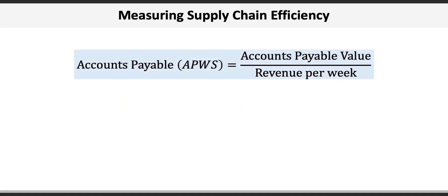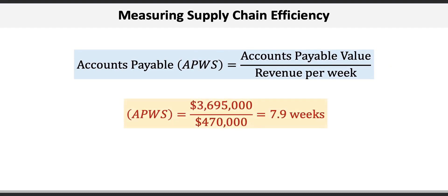Accounts payable week supply is the accounts payable value divided by the revenue per week. So $3,695,000 in accounts payable divided by $470,000 revenue per week gives an APWS of 7.9 weeks.